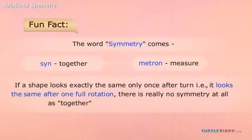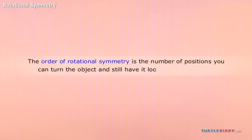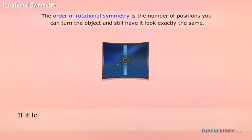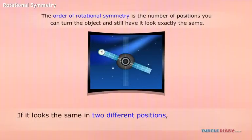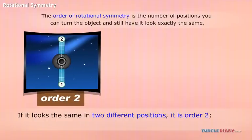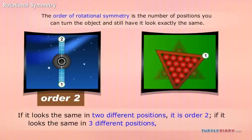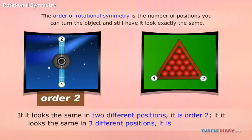Fun Fact: The order of rotational symmetry is the number of positions you can turn the object and still have it look exactly the same. If it looks the same in two different positions, it is order two. If it looks the same in three different positions, it is order three.